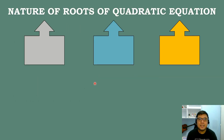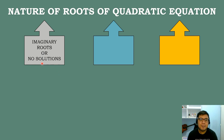Now let us discuss the nature of roots of a quadratic equation. Nature refers to the types of numbers the roots can be. In a nature of roots of a quadratic equation, there are three types. The first one is imaginary roots, or no solutions — we cannot compute for the roots, because there is a negative number inside the radical sign.